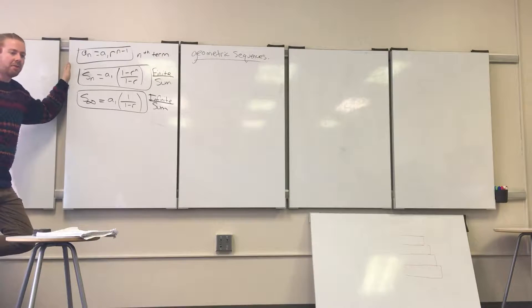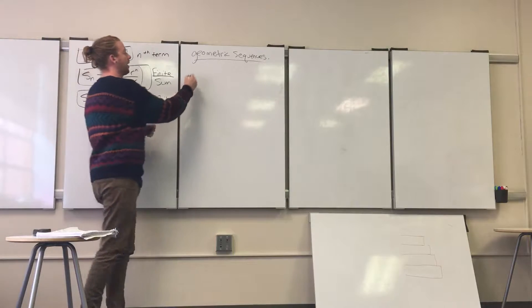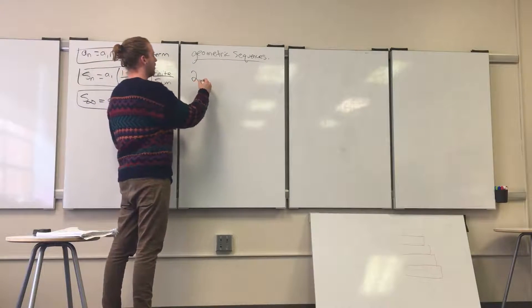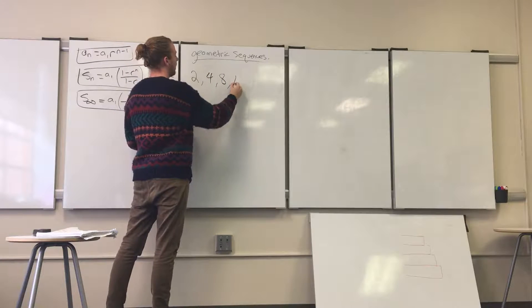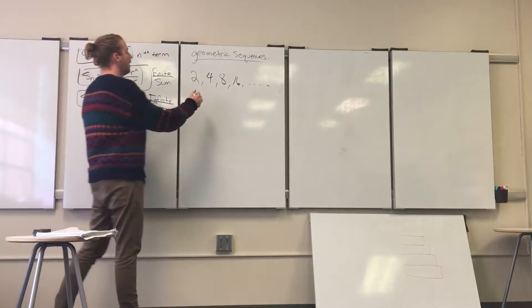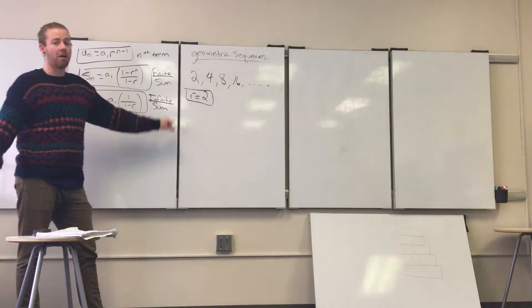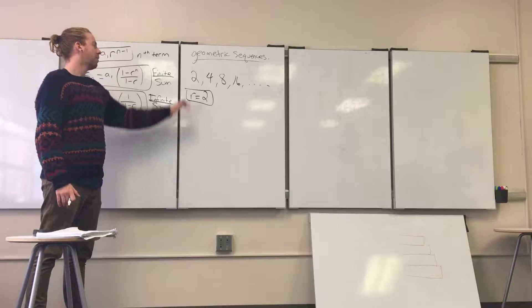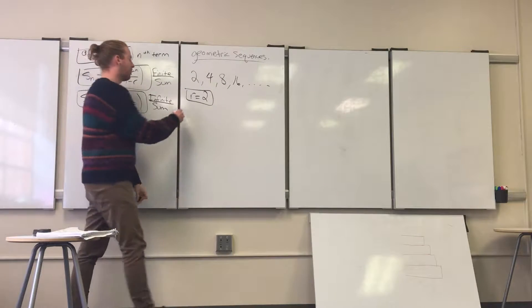Overall, a geometric sequence is when you take a sequence of numbers and multiply by the same thing over and over to get the rest of the numbers. For example, start with two and multiply by two to get four, then eight, then 16, 32, 64, and so on. Here, R is called the common ratio — the value you multiply by to get from one term to the next. So 2 times 2 is 4, 4 times 2 is 8, 8 times 2 is 16, and you keep going.